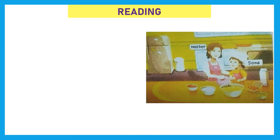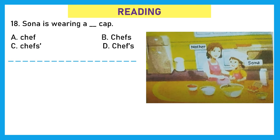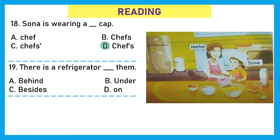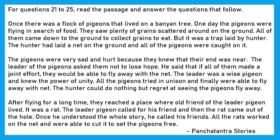Question 18. Sona is wearing a blank cap. Chef, chefs, chefs, or option D, chefs. Now she is wearing a chef's cap, right? And here we have to choose the singular noun's possessive, that would be B, chef's, chef and apostrophe S. Question 19. There is a refrigerator blank them. Where is the refrigerator located? Can you see it is behind them. Option A is the right answer. Question 20. The color blank their apron is pink. The color of their apron. Option B is the right answer.